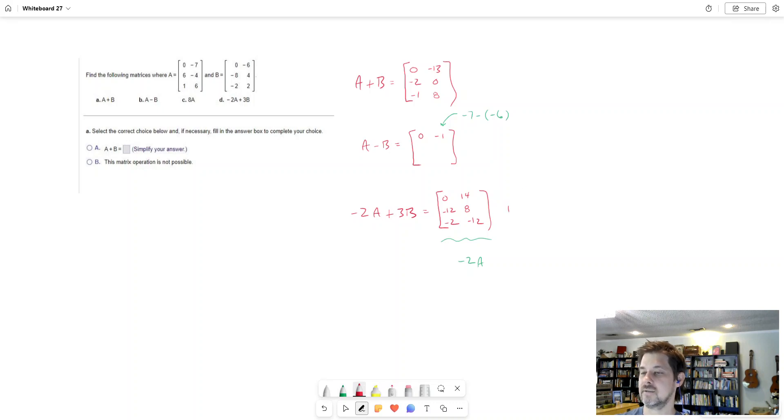So then we're going to add 3B. That's the same concept, a different number. Take the matrix B, multiply every single entry by 3 where it is. Each of these numbers in matrix B gets multiplied by 3, and that's what I have here. So 3 times 0 is 0. 3 times negative 6, negative 18. 3 times negative 8, negative 24. 3 times 4, 12. And then negative 6, which is 3 times negative 2, and then 6. So there, what you're looking at is 3B.